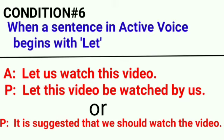Condition 6: when a sentence in active voice begins with 'let'. जब active voice में ही 'let' से sentence शुरू हो। Example: 'let us watch this video' — इसमें subject objective form में है। तो passive बनाने के लिए: subject को object की जगह, object को subject की जगह रखेंगे — general rule follow होगा। Passive: 'let this video be watched by us'. या फिर दूसरे तरह से भी बना सकते हैं — 'it is suggested that we should watch the video'. तो दो तरह से ऐसे cases को बना सकते हैं। आज हमने imperative sentences के सारे cases deal किए, 'let' वाले sentences को भी active और passive दोनों form में deal किया।